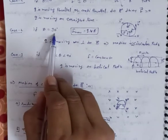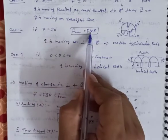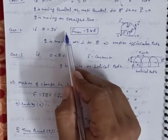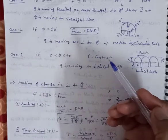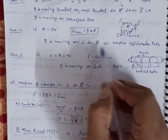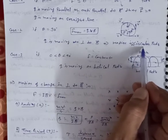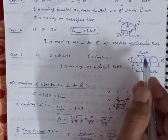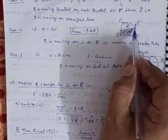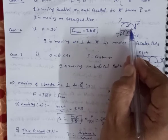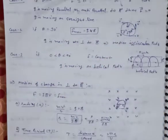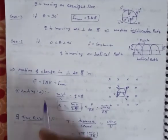Second case: if θ = 90°, then sin 90° = 1, so F = qvB — this is the maximum value of the force. The path of the charged particle moving perpendicular to the magnetic field is a circular path. The velocity is always tangential, and the magnetic force acts as centripetal force always directed toward the center of the circle.